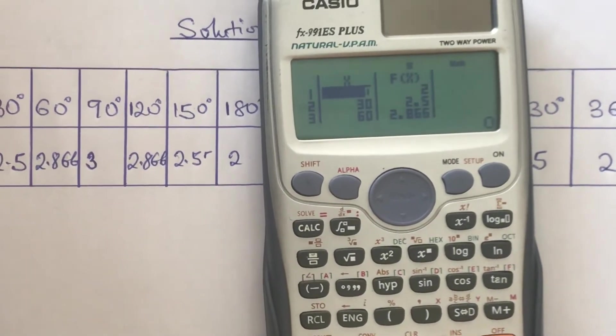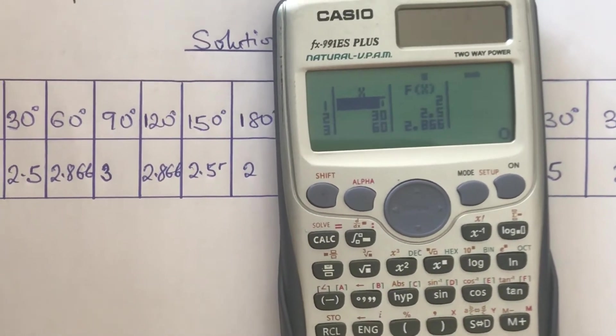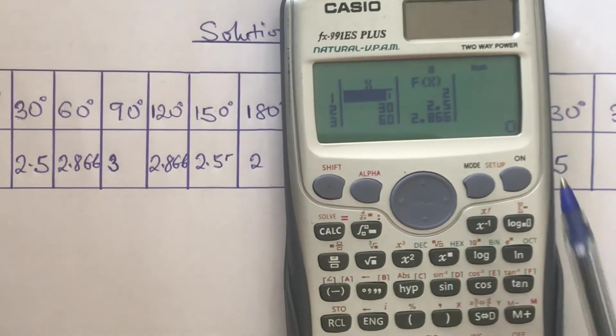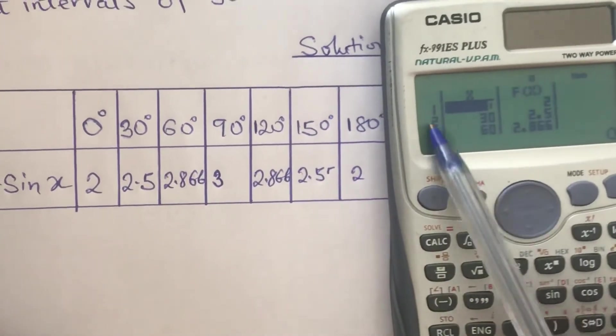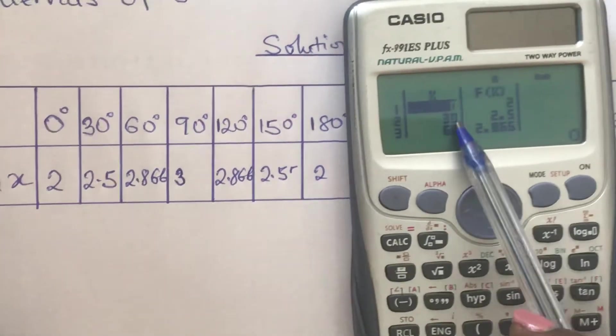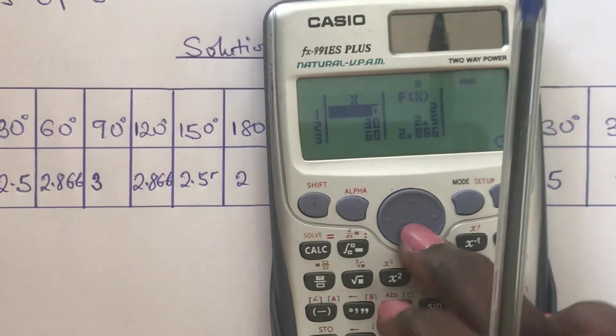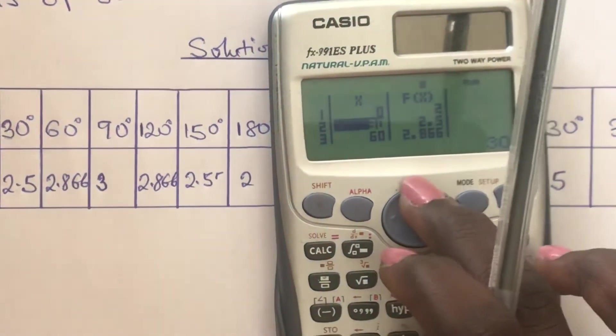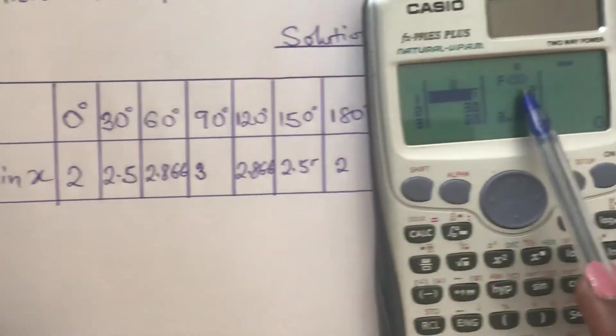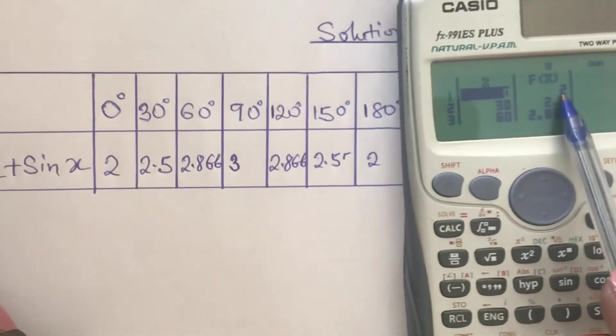We wait for the calculator to bring out our answers. So we have our answers now. These are the x values, which was 0, 30, 60, and so on. What value did we get for the 0 degrees? We have 2.